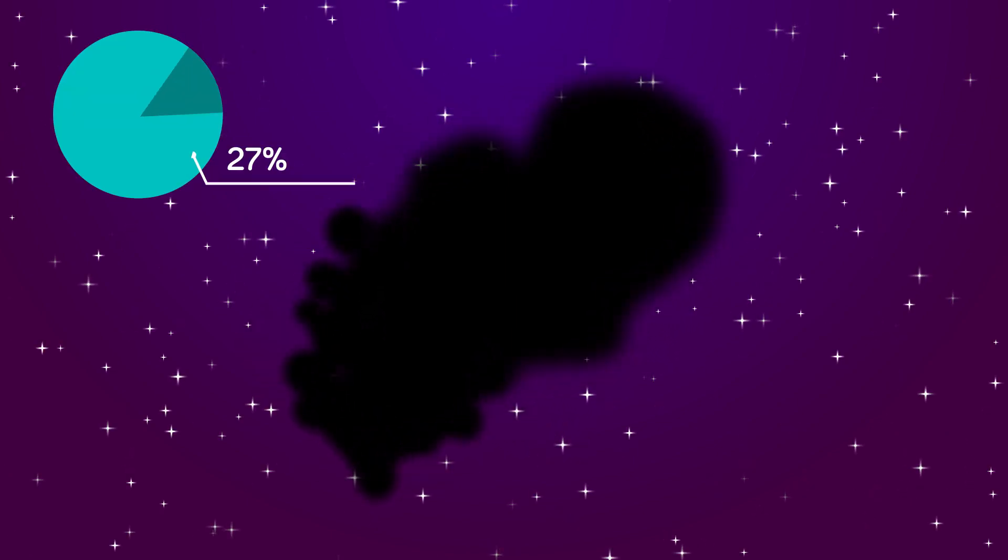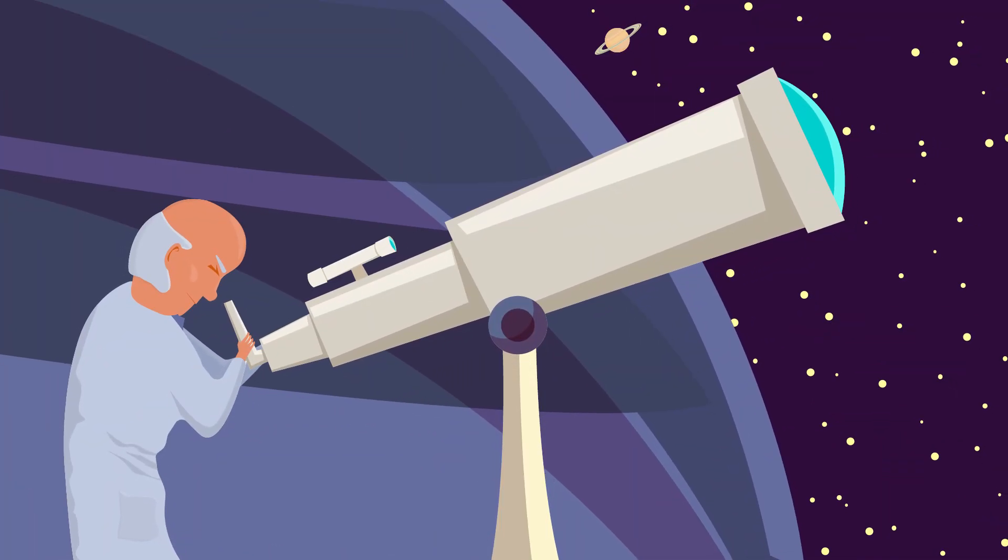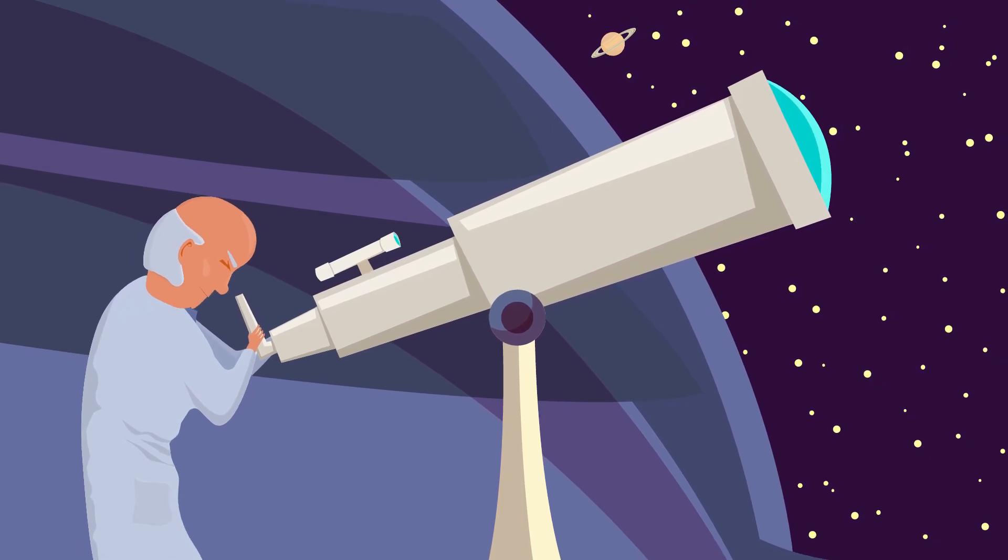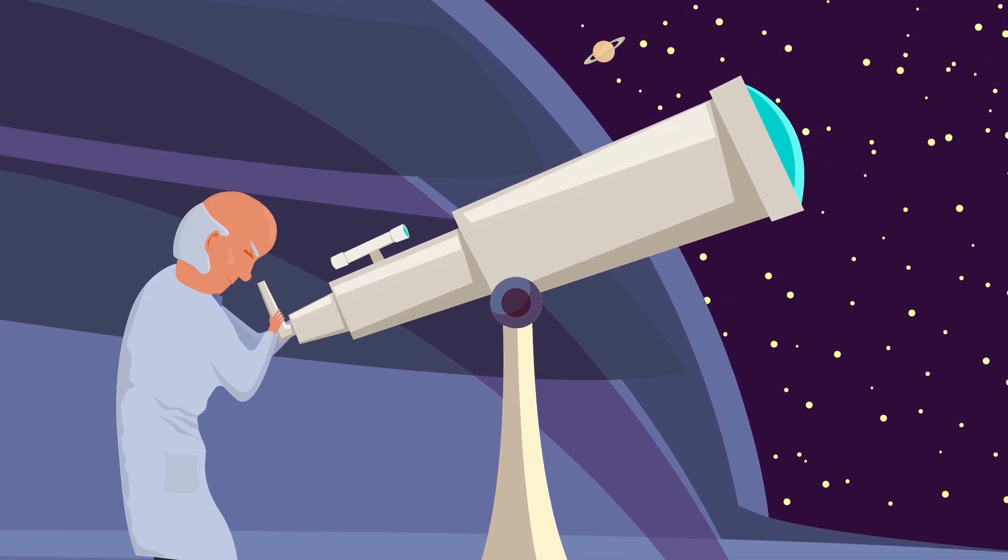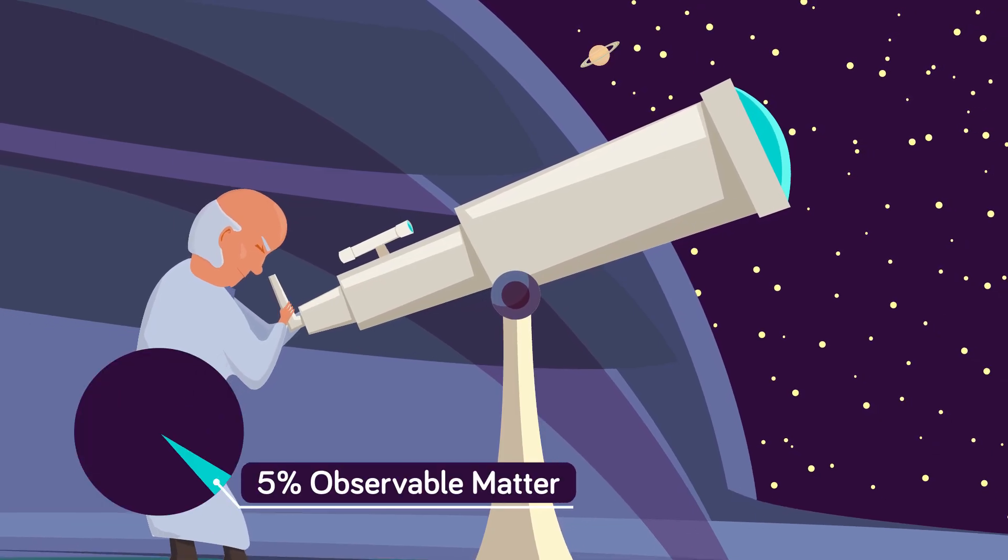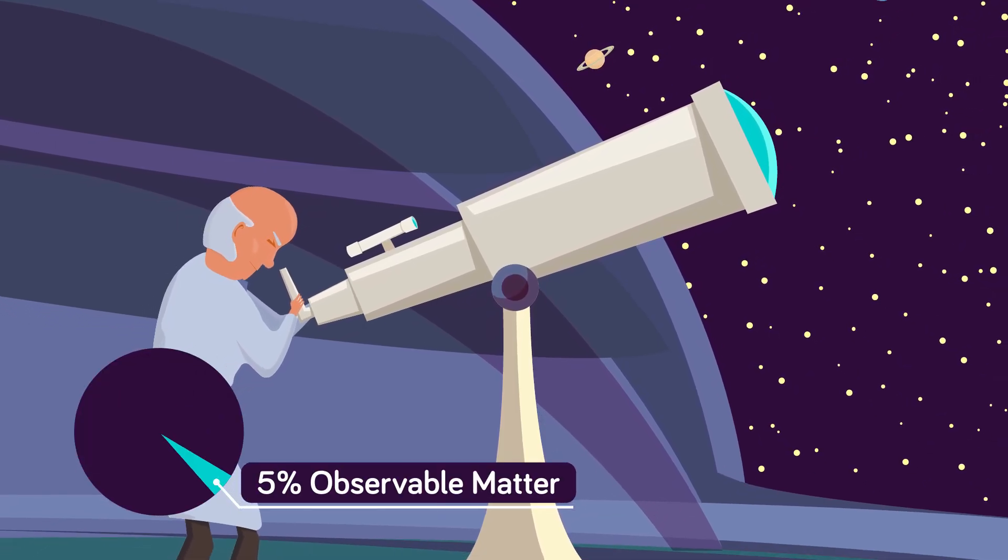If dark energy makes up 68% of our universe, dark matter makes up another 27%. That means all of the so-called normal matter that we can see and observe even with our most sensitive equipment makes up only a measly 5% of the entire universe. That's a little bit unnerving to think about.